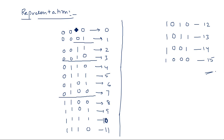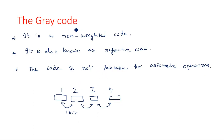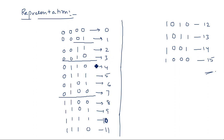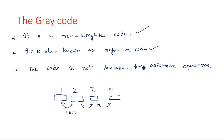It is a non-weighted code, also known as reflective code — because everywhere we take a mirror image and reflection. The code is not suitable for arithmetic operations because it is non-weighted. Another important feature is it has only one bit difference between successive numbers. Let us verify whether this one-bit distance property is satisfied.